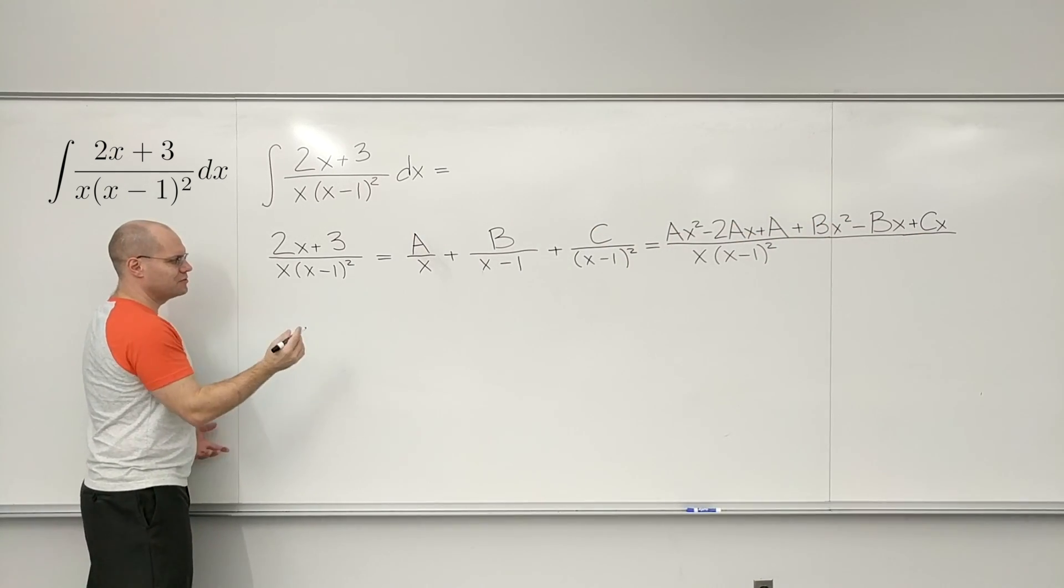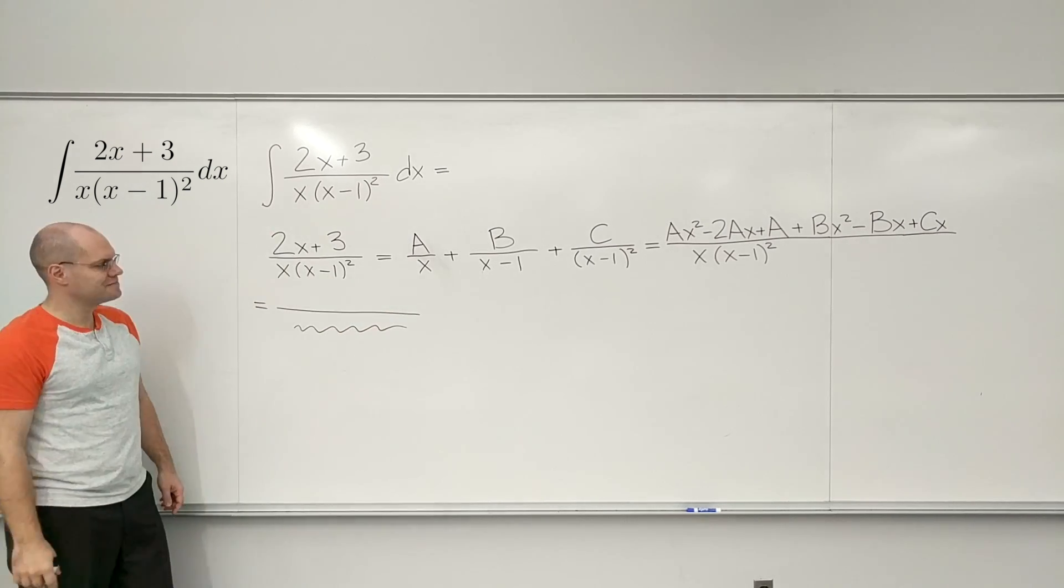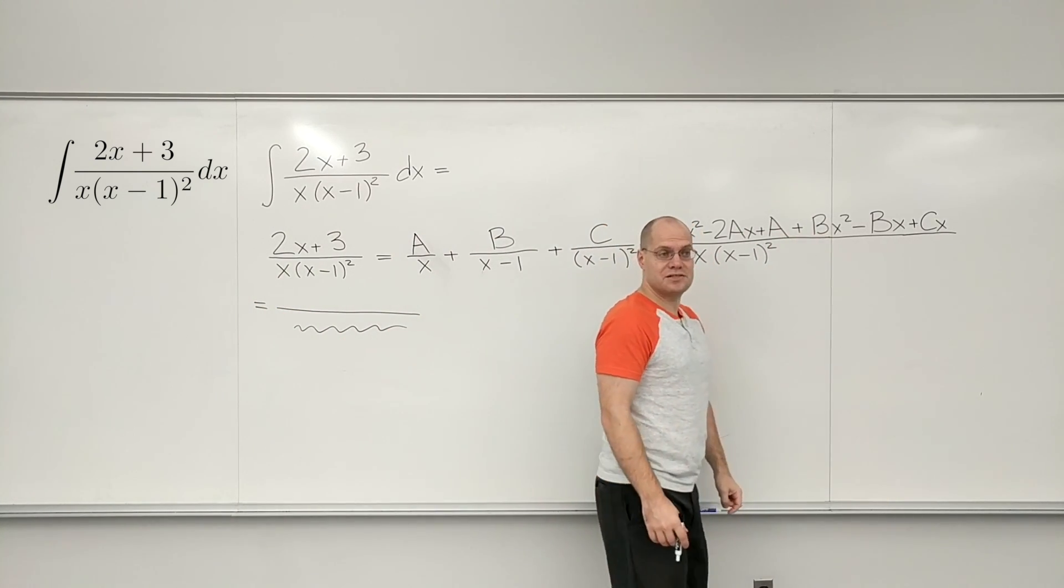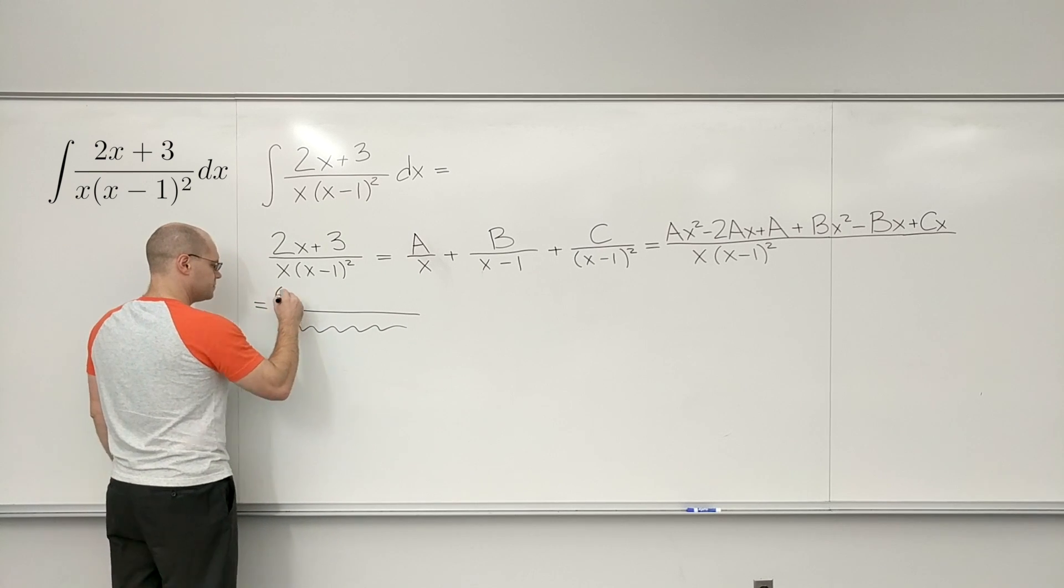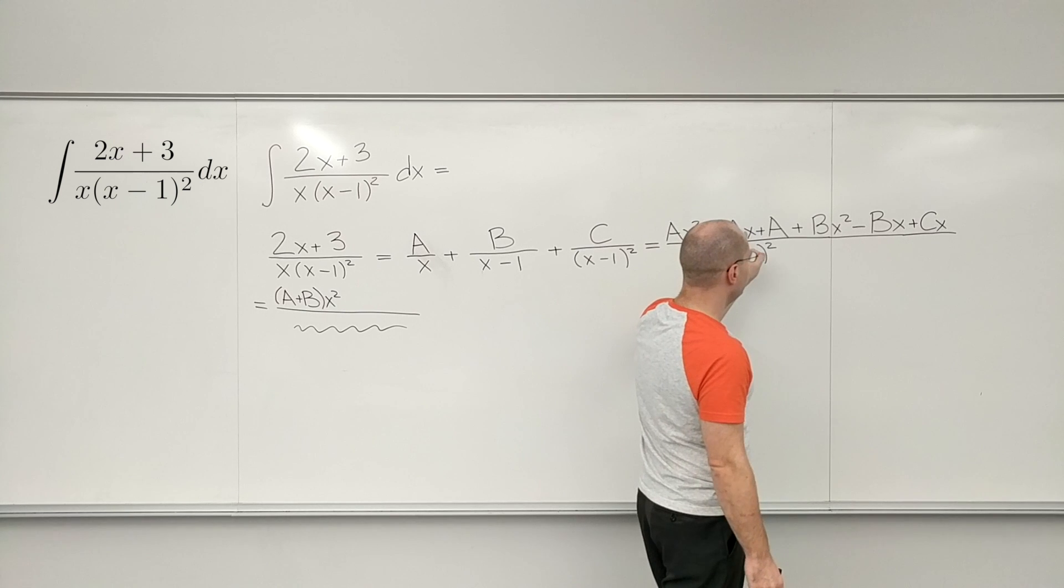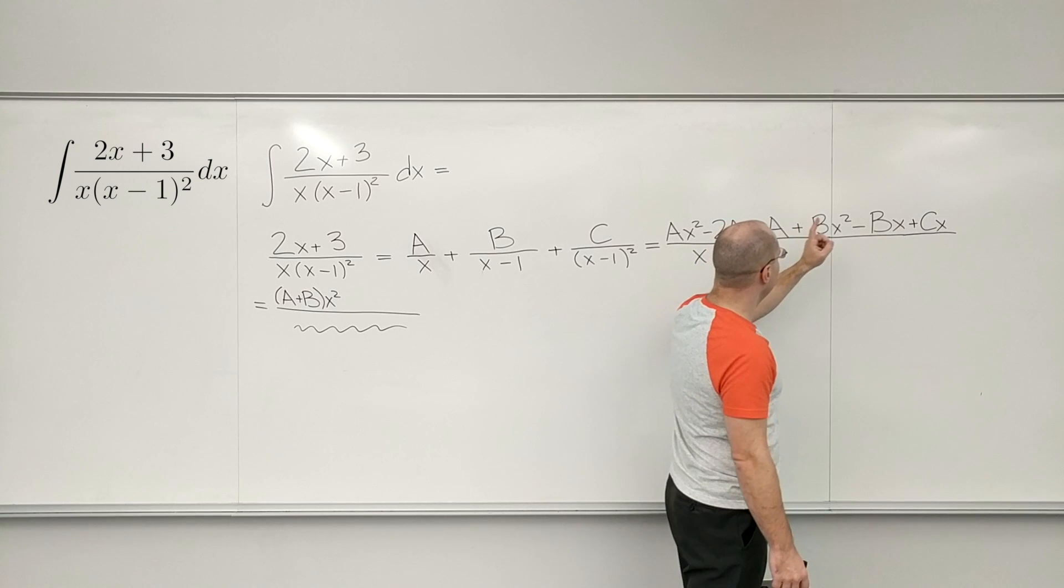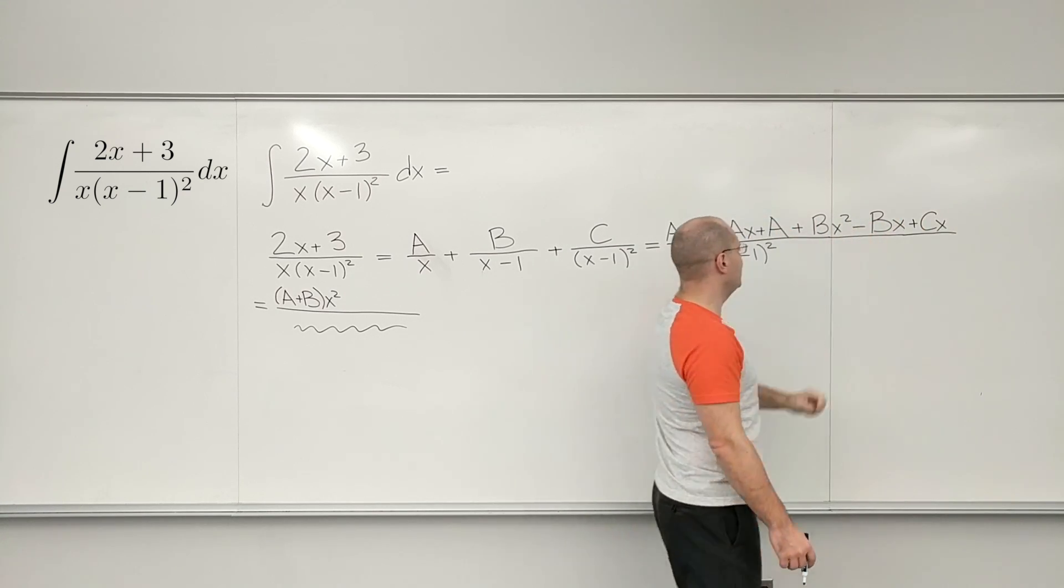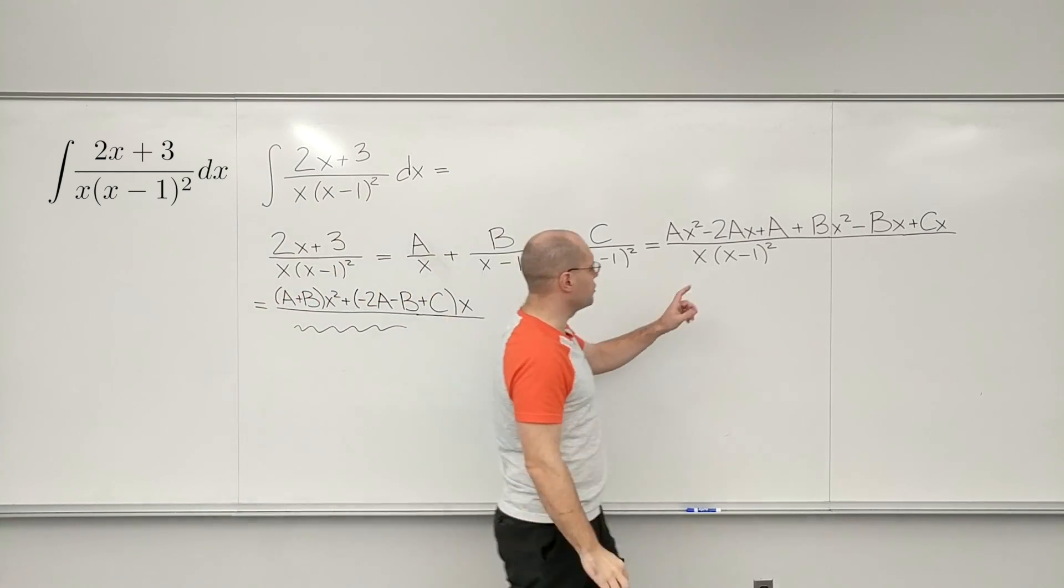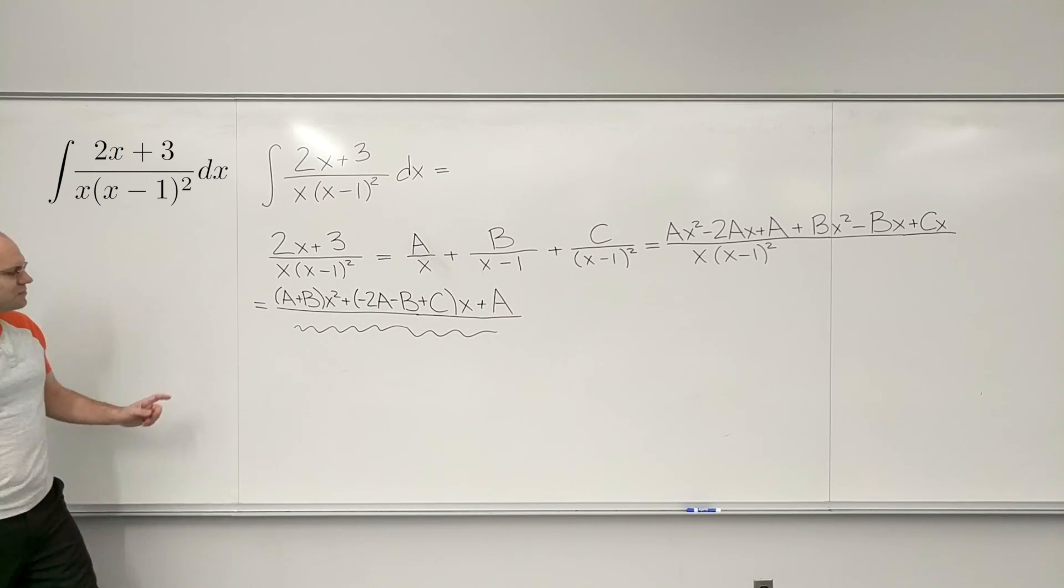Let's continue. Where should I continue? I guess I'll continue right here. Equals. Now let's combine like terms. A x squared plus B x squared. So A plus B x squared. Now combining the x terms. Minus 2A minus B plus C. Minus 2A minus B plus C. And finally the free term. A.